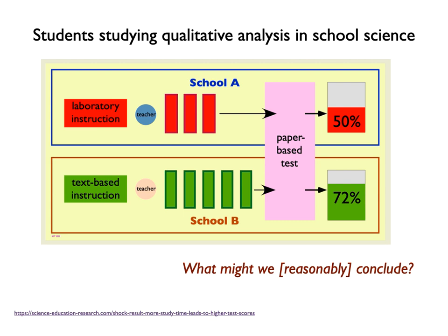The two classes were taught by different teachers. The two classes were drawn from different schools — they were considered to be similar schools, but even so. The assessment tool was a paper-based test. So how do we know that if a laboratory-based assessment had been used, the results would not have been very different? After all, to actually do qualitative analysis you need to work with real samples and reagents in a laboratory. You might feel I'm only stating the obvious, but if it is so obvious, how does such work get published without strong caveats, and sometimes even in the most prestigious journals?